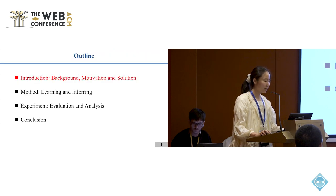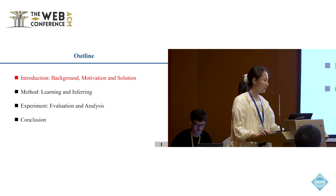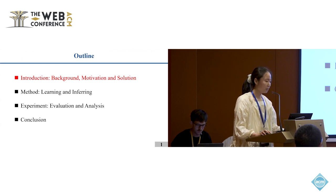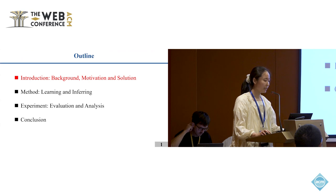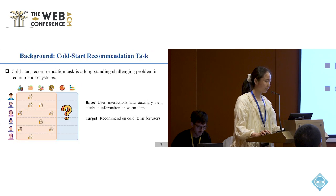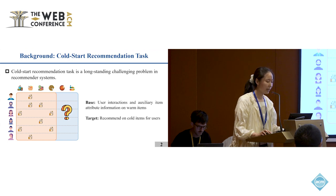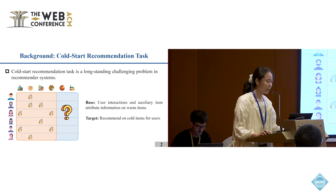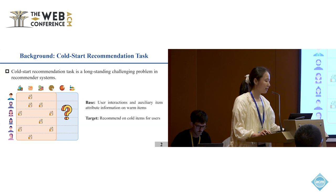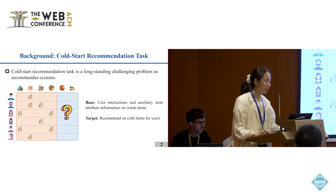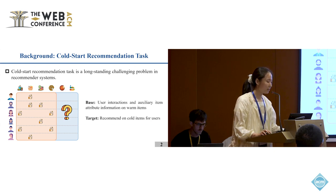My talk consists of four main parts. First is the introduction, which includes background, motivation, and the solution. The Cold Start Recommendation task is a long-standing challenging problem in recommender systems. In general, we can train a recommendation model based on user interactions and auxiliary item attribute information on warm items, then use the trained model to make recommendations on the cold items.